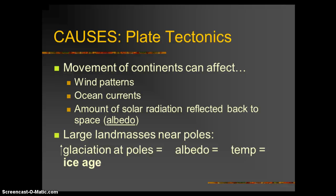How bright is it on a sunny winter day when you go outside? Very bright, because that albedo is very high — high albedo, high reflectivity, less absorption. And if it's reflecting and not absorbing, it's not converting to heat, so it's going to be cold. Therefore we have an ice age situation. Plate tectonics is just one factor of many.